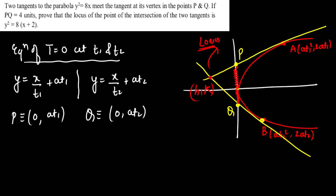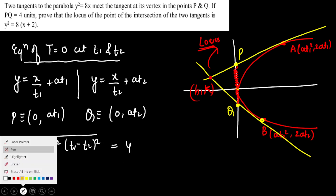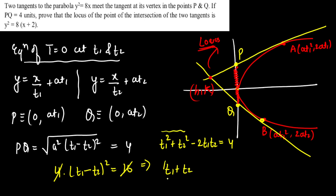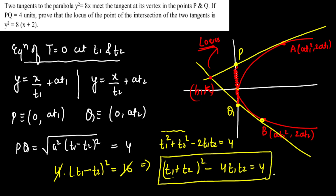They are saying the PQ distance is 4 units. Applying the distance formula, PQ = √(a²(t₁ - t₂)²) = 4. Squaring both sides gives a²(t₁ - t₂)² = 16, which expands to t₁² + t₂² - 2t₁t₂ = 4. I'm going to rewrite this as (t₁ + t₂)² - 4t₁t₂ = 4. I'll call this equation one, and the reason for this grouping will become clear shortly.